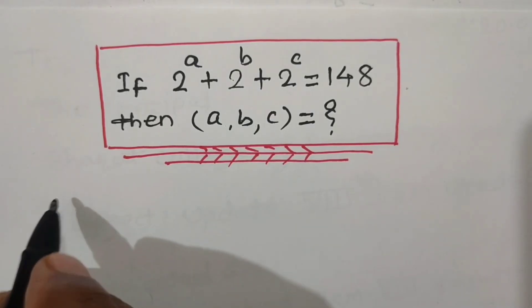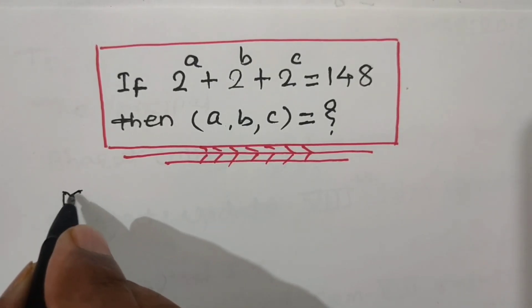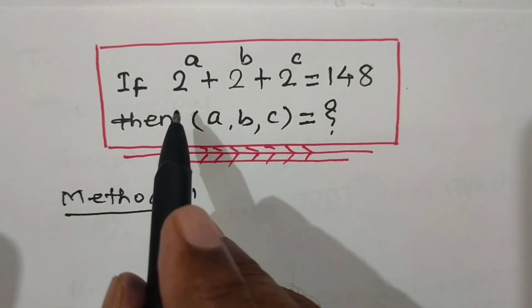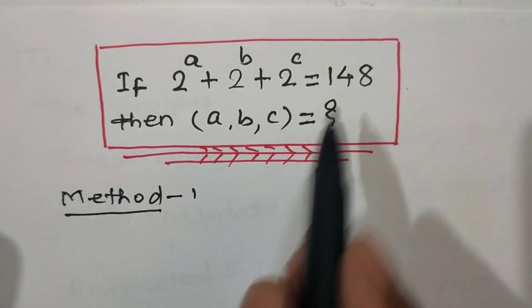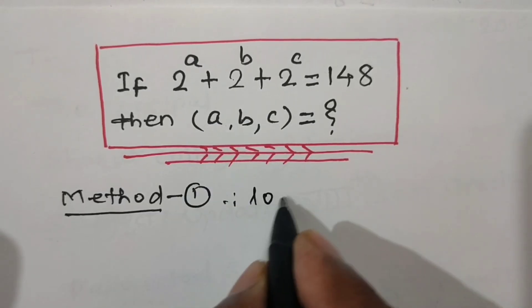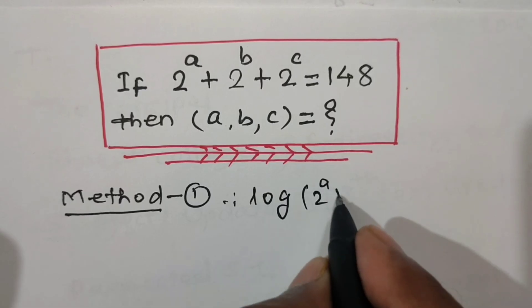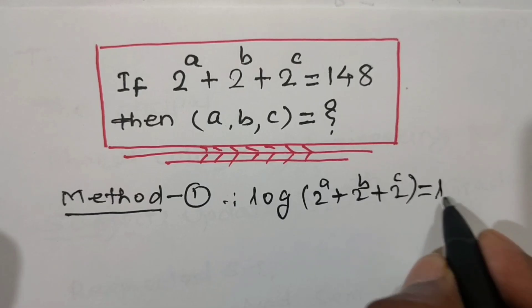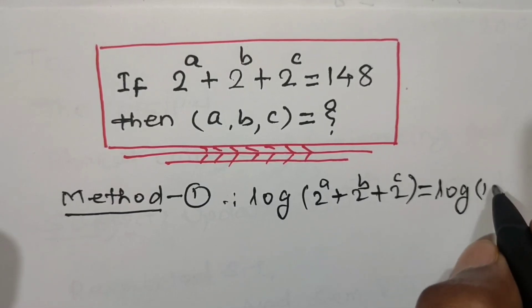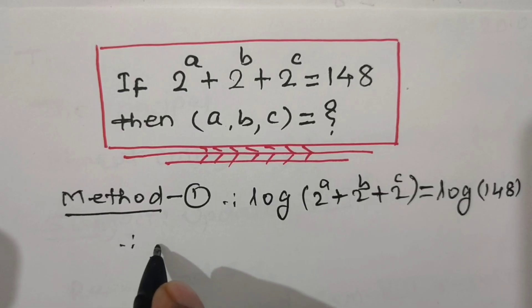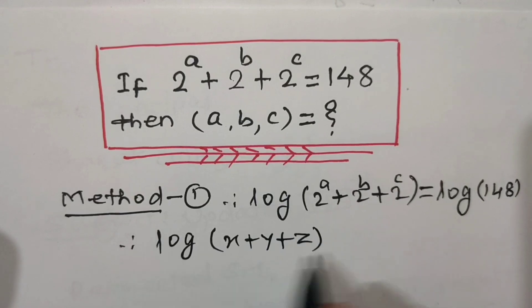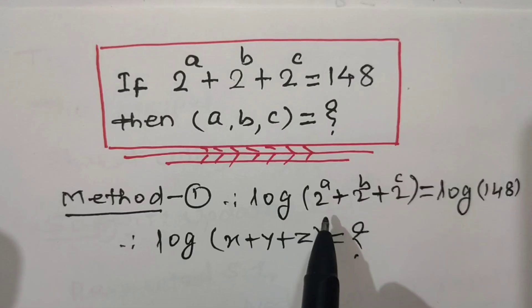If we solve this sum applying property of logarithm — Method 1 — taking log on both sides, we can write logarithm of (2^a + 2^b + 2^c) is equal to logarithm of 148. However, since there is no standard formula for logarithm of x plus y plus z, we cannot separate this.